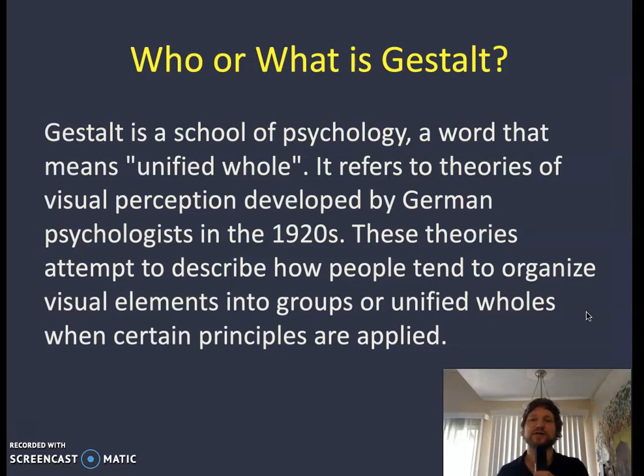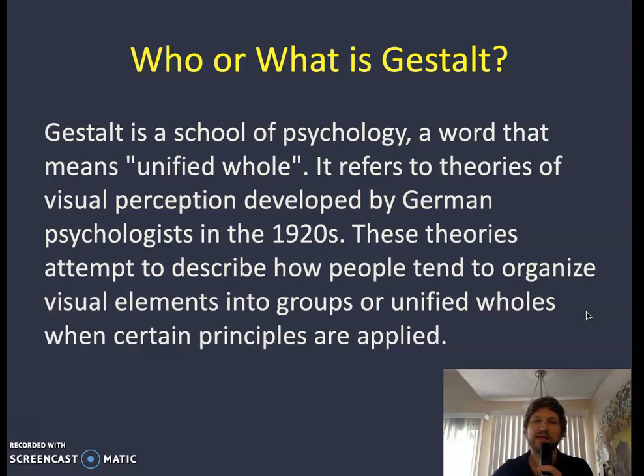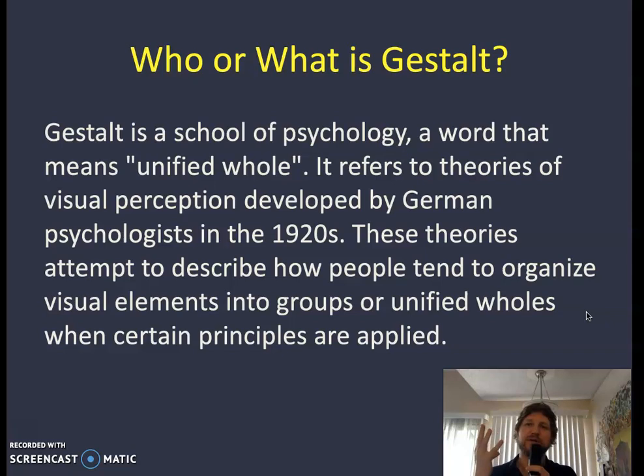Gestalt was a school of psychology in Germany, and it means 'unified whole.' It refers to visual perception ideas developed by German psychologists in the 1920s. They tried to talk about how we organize visual information — how do we make sense of the visual world, figure out what's going on based on scant visual information, and come to an idea about the whole situation from fragmented parts.